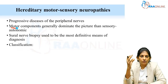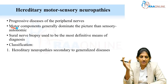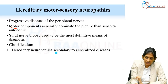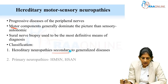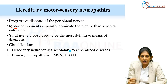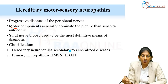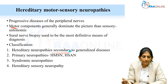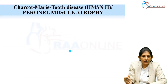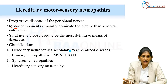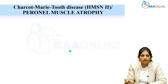We classify these hereditary neuropathies as: secondary to generalized diseases, or primary neuropathies like HMSN — hereditary motor sensory neuropathies — or HSANs — hereditary sensory and autonomic neuropathies without any motor involvement. There can also be a pure sensory neuropathy, or neuropathy secondary to syndromes.